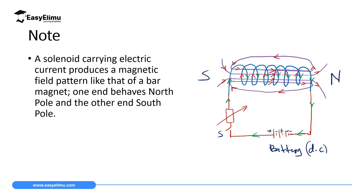If you hold this solenoid with your right hand such that the fingers point in the direction of the current — either following the back wires moving upward or the front wires moving down — your thumb will automatically point to the right-hand side of the screen, which is the north pole. The other end will be the south pole.